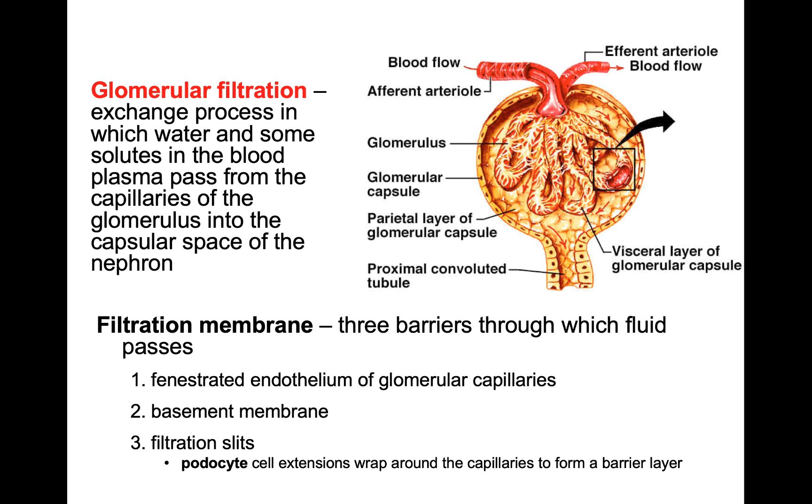The second part of the kidney PowerPoint is going to continue starting at the glomerulus. In the first recording, we did an overview of all the sections of the kidney and nephron, and I gave you a few details about each of them. Now we're going to go into detail and cover the very specific mechanisms and physiology of each section. We'll start at the glomerulus, which is the first part of the nephron.